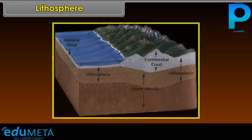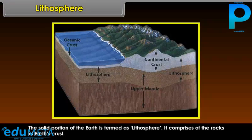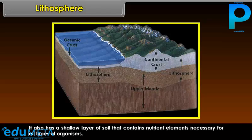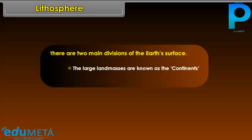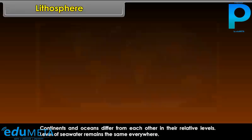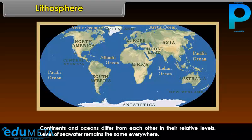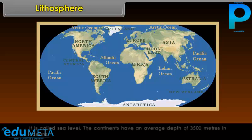The solid portion of the Earth is termed as the Lithosphere. It comprises the rocks of the Earth's crust and also a shallow layer of soil that contains nutrient elements necessary for all types of organisms. There are two main divisions of the Earth's surface: large land masses known as continents, and ocean basins which contain large water bodies. The level of seawater remains the same everywhere and is called sea level.